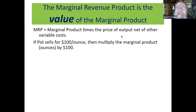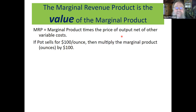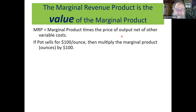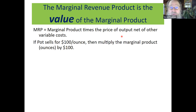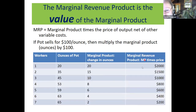You may sell your pot for a hundred dollars, but if each additional ounce costs you $70 in fertilizer, seeds, extra electricity, or whatever, you really only get $30 — and that's what you use in thinking about hiring more workers. Having said that, we're going to forget about it until the problem set. Pot sells for $100 an ounce — multiply the marginal product of labor by $100 and that gives you the marginal revenue product.